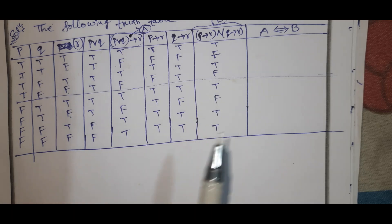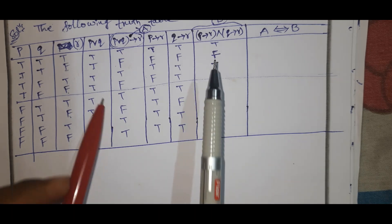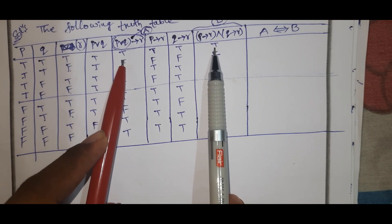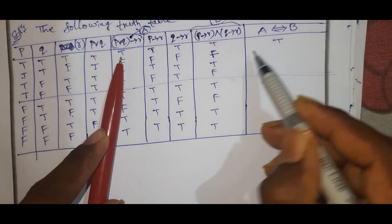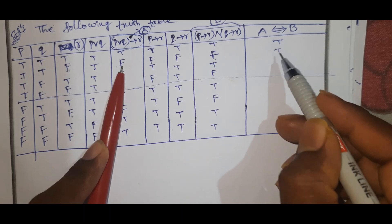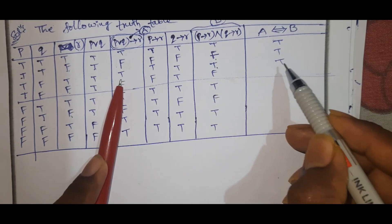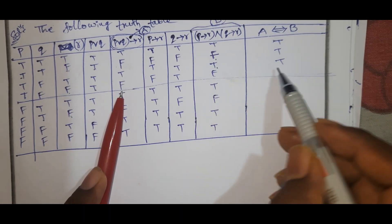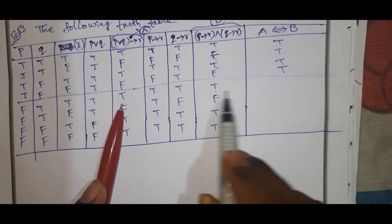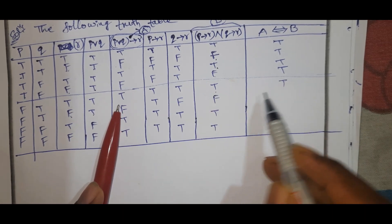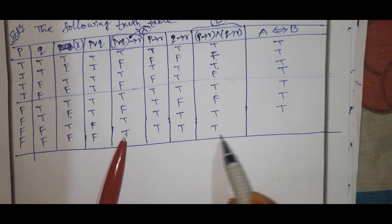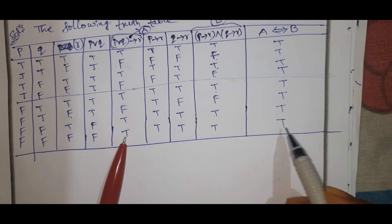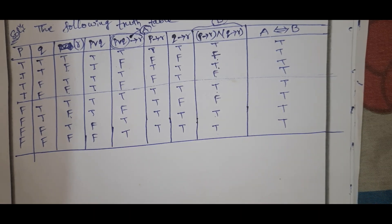Here are the two questions. First statement true, true; second statement false, false — true. Next: true, true — true. Next: false, false — true. Next: true, true. False, false — true. Next: true. And the truth is tautology.